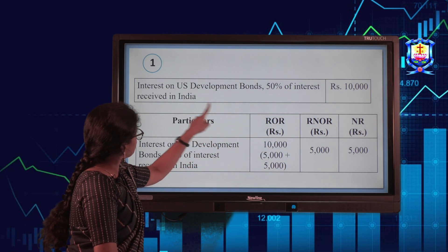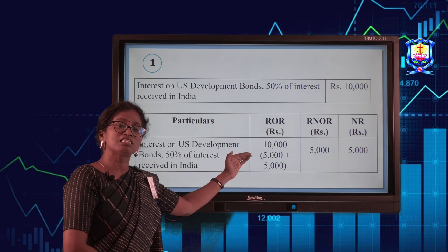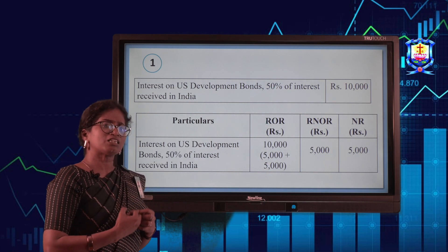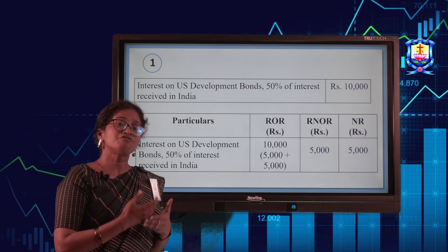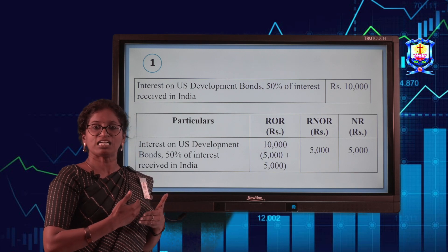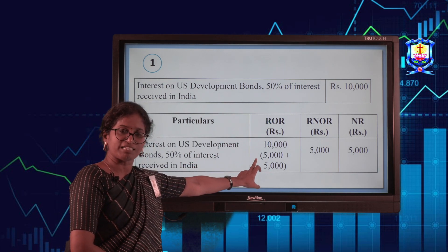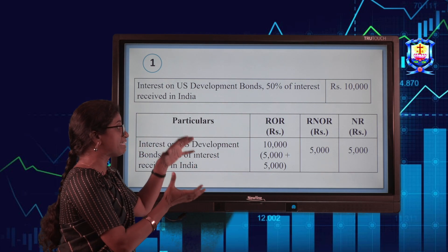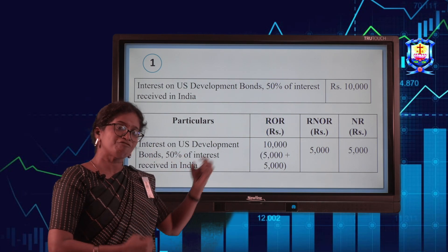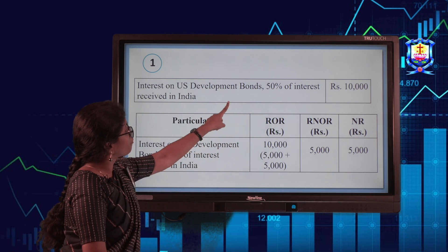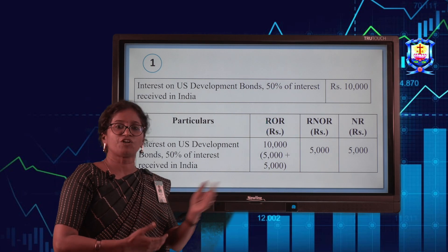So 50% of 10,000 is 5,000, which is taxable for ROR, RNOR, and non-resident. The remaining 5,000 — interest on US Development Bonds — is foreign income, taxable only for resident and ordinarily resident. So you can write the entire 10,000 for ROR since it is global income, and 5,000 for RNOR and non-resident since 50% was received in India.